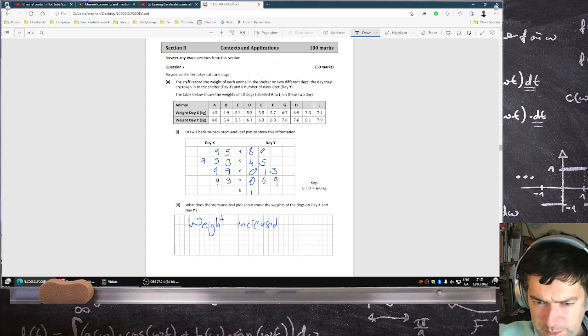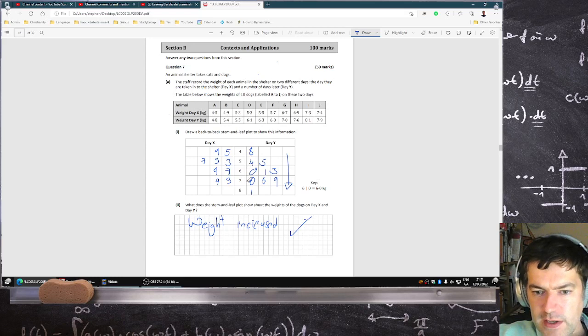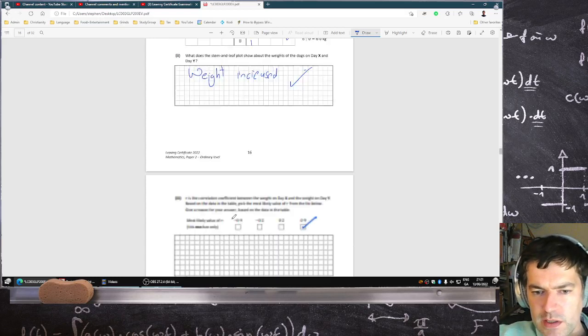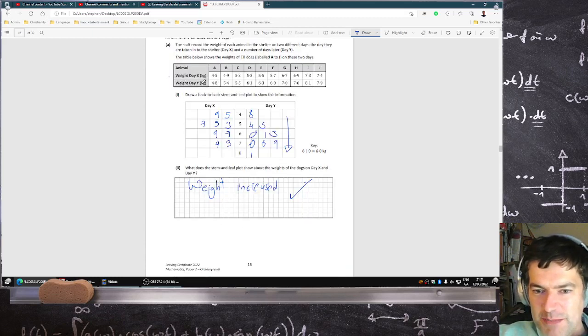So that's what you get when you plot them in the stem and leaf. What you notice is that the weights have increased. So 4.5 is the smallest one here and in the y cases the smallest one is 4.8, then it goes 5.4 and then 5.5 all the way up to the highest one which is 8.1.